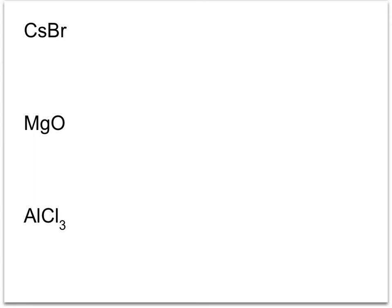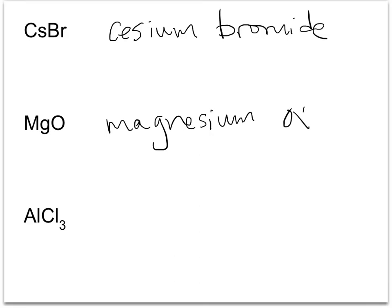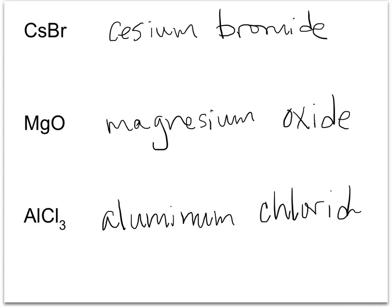Okay, for the answers. This first one, Cs is cesium. And then bromine is still bromide. This next one, Mg, magnesium. And then oxygen becomes oxide. And finally the last example, you have aluminum. And chlorine becomes chloride. So as you can see, binary ionic compounds, not too bad. Alright. Thank you.